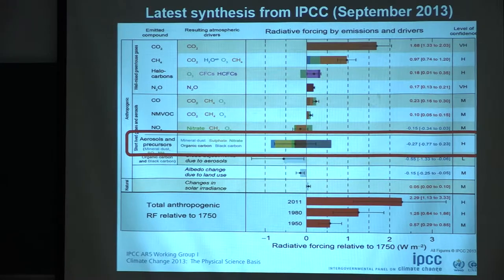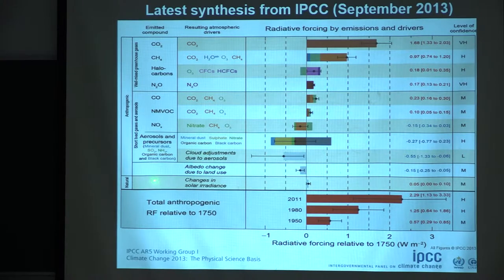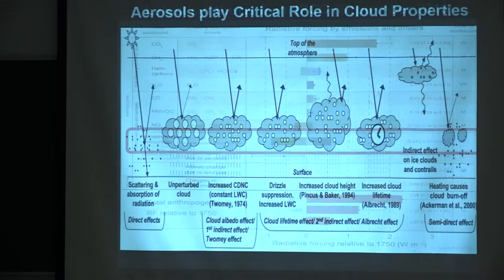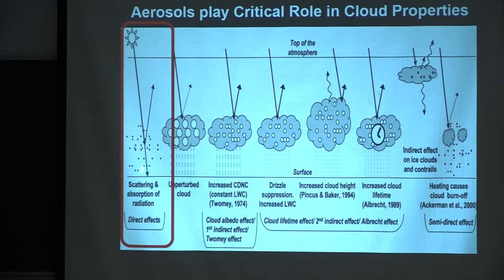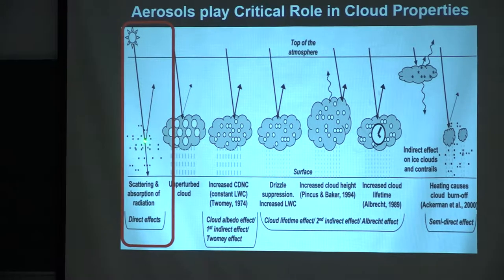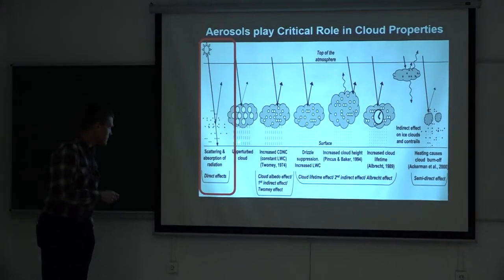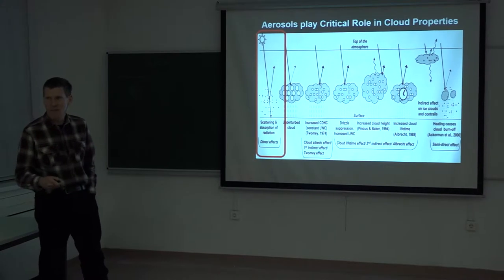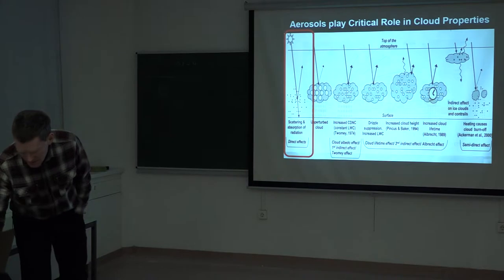There is also the aerosol–cloud interaction term on this chart, and again clouds will cool the atmosphere, but the science of how aerosols and clouds interact is something we don't fully understand — there's again a large uncertainty associated with that. We have the direct effect — solar radiation either being scattered back out to space or being absorbed and re-radiated — and then the effect of aerosols on clouds. As you put more aerosols into clouds, the cloud droplets will get smaller because they're producing what are called cloud condensation nuclei.